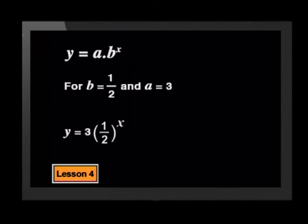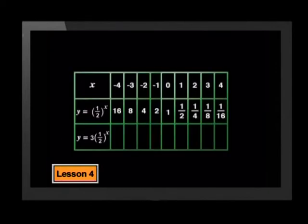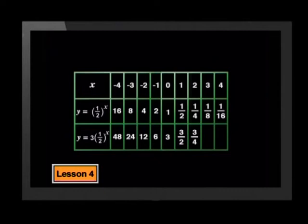Now let's change the a-value to 3. So the new function is y equals 3 times one half to the power of x. Let's make another column in the table for our new y-values — each new y-value is 3 times the old y-value. So we'll get 48, 24, 12, 6, 3, then 3 halves, 3 quarters, 3 eighths, and 3 sixteenths.